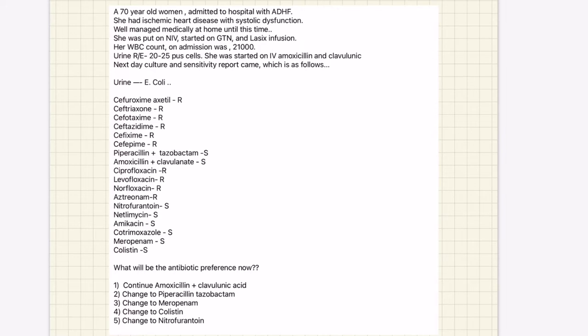Treatment of heart failure started - she was put on NIV, then GTN and Lasix were given and she improved. Her WBC count on admission was 21,000 and urine had 20 to 25 pus cells. Since she came from the community, she was started on amoxicillin-clavulanic acid. The culture and sensitivity report came showing urine is growing E. coli with this resistance pattern. What is the antibiotic preference now?